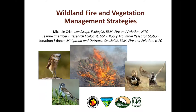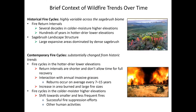To help understand sagebrush wildfire management, I'll provide a brief context of how wildfire trends have changed over time across the sagebrush biome. Historically, fire cycles were highly variable across the sagebrush biome, where fire return intervals ranged from several decades in colder, higher moisture elevations to hundreds of years in the hotter, drier, lower elevations. These fire cycles had a strong influence on sagebrush landscape structure and helped create large, expansive areas dominated by dense sagebrush.